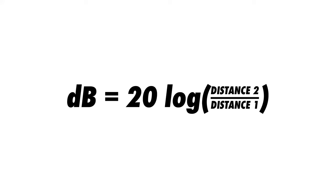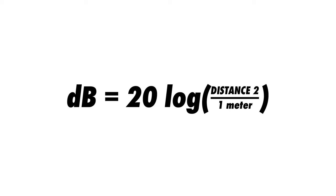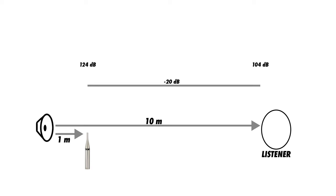However, if you know the listening distance, we can use a slightly different decibel formula and punch in the numbers. We use this formula because we're dealing with distance rather than comparing power. Entering 1 meter from the sensitivity spec as distance 1 and 10 meters as distance 2, the calculator indicates a loss of 20 dB over this distance, meaning the 124 dB at one meter will be reduced to 104 dB at 10 meters.